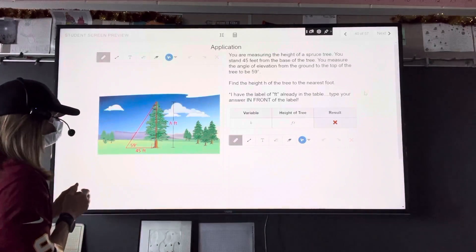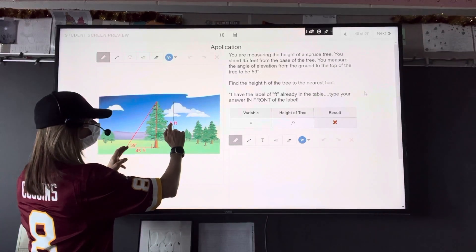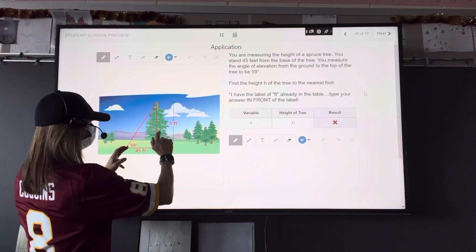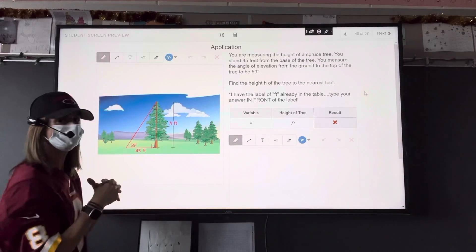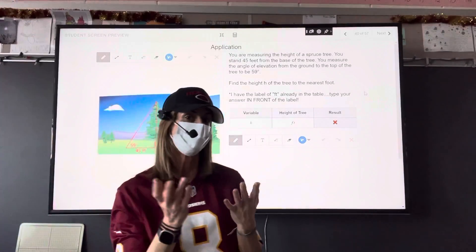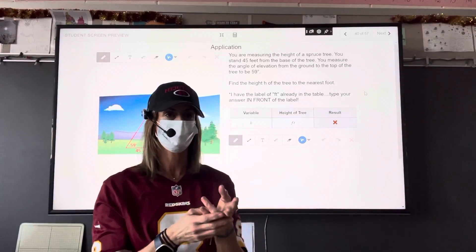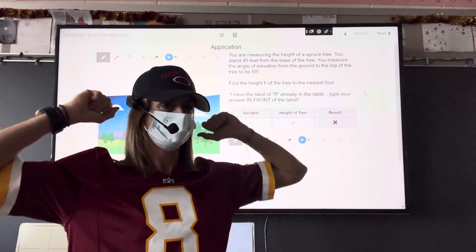Okay, so this side is opposite what we're looking for. This 59 degrees and this 45 feet is adjacent. So which trig ratio uses opposite and adjacent? You guys already did this, right? What'd you get? Sorry, I can't hear you. I heard multiple people talking, but tangent.